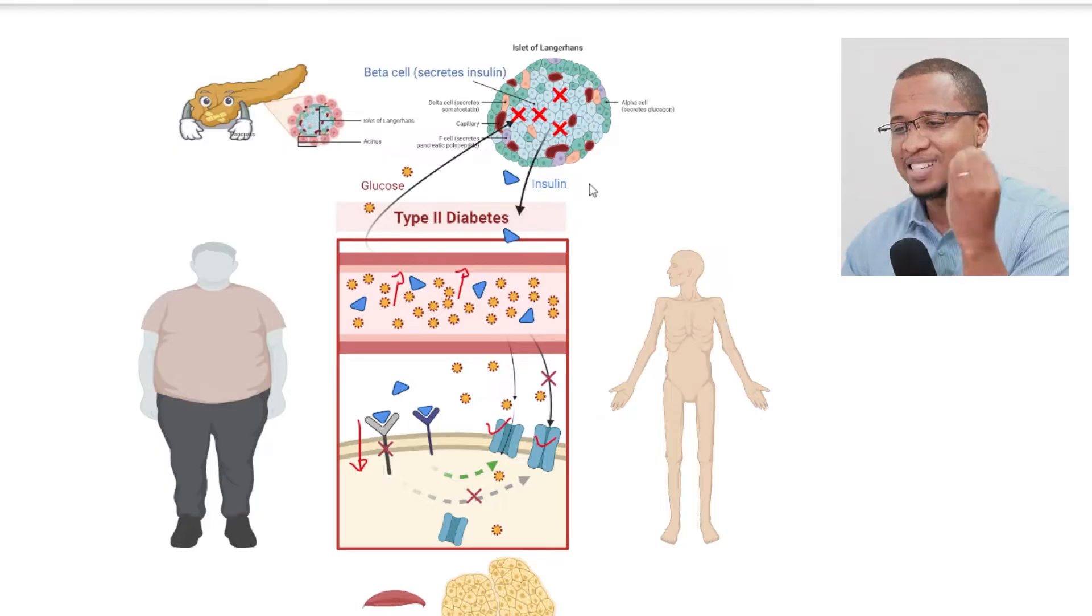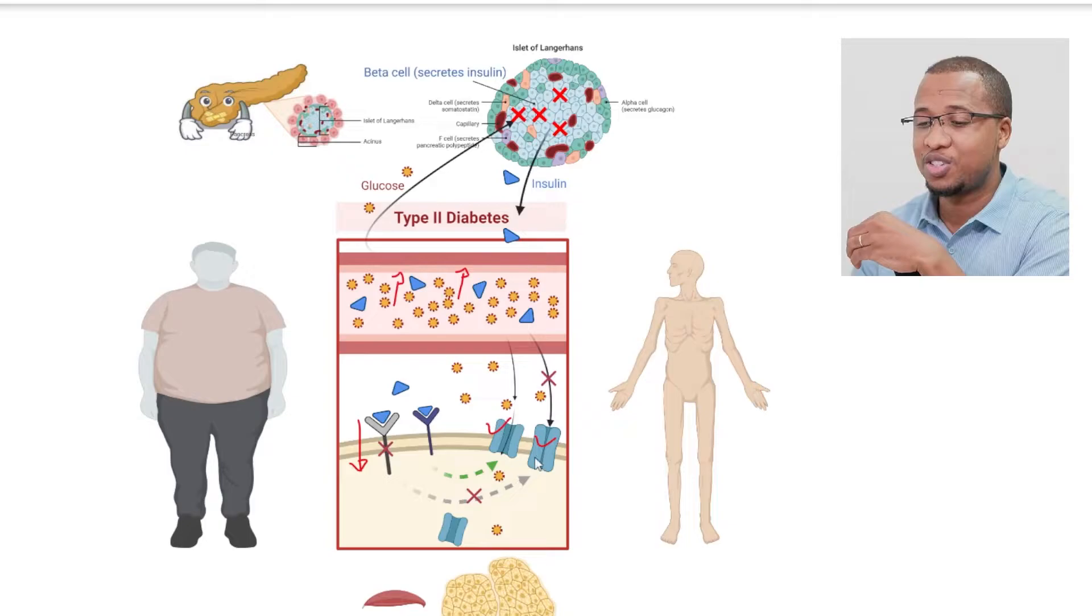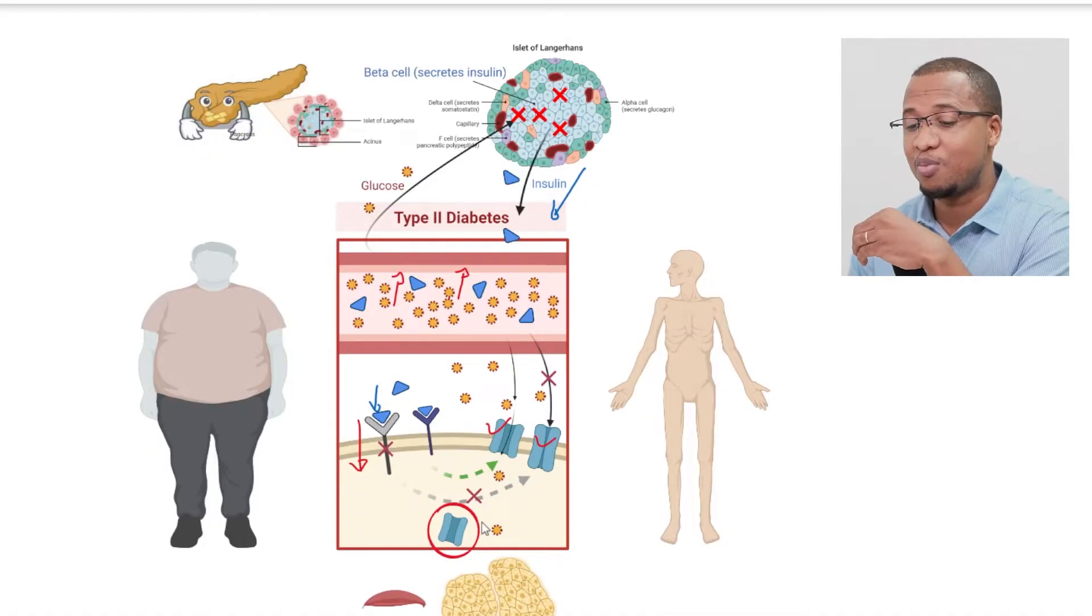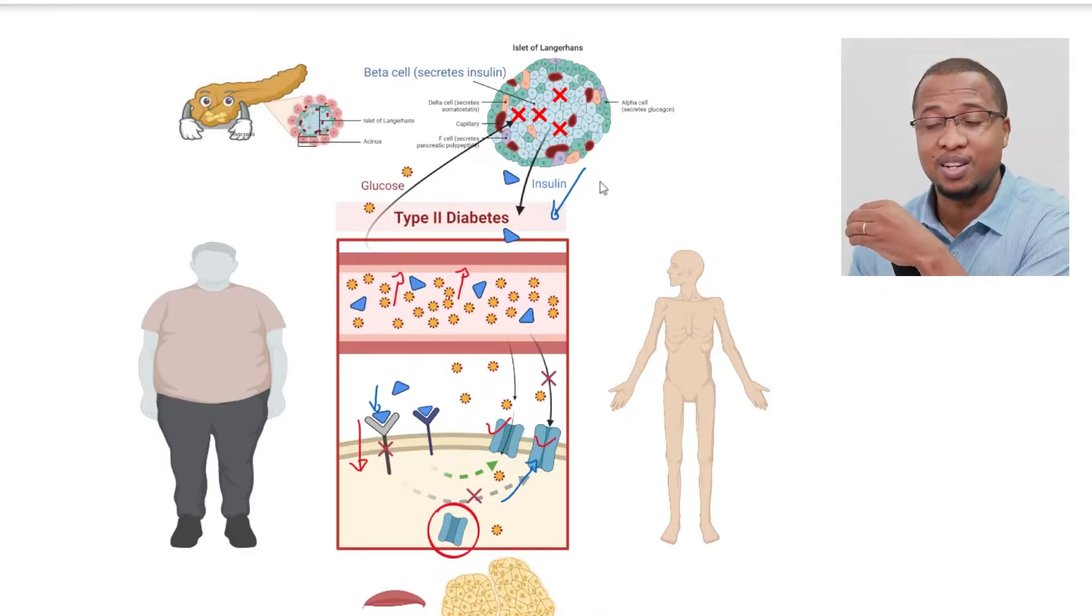But the problem with these cells is that they are dependent on insulin because they don't have the transporters on the membrane. They have the transporters inside the cells. And they need insulin to come and attach to the cells and tell them to bring the transporters to the membrane so that they can get glucose. So these cells, your muscle cells and your fat cells, they have glucose transporters 4 that are dependent on the insulin.